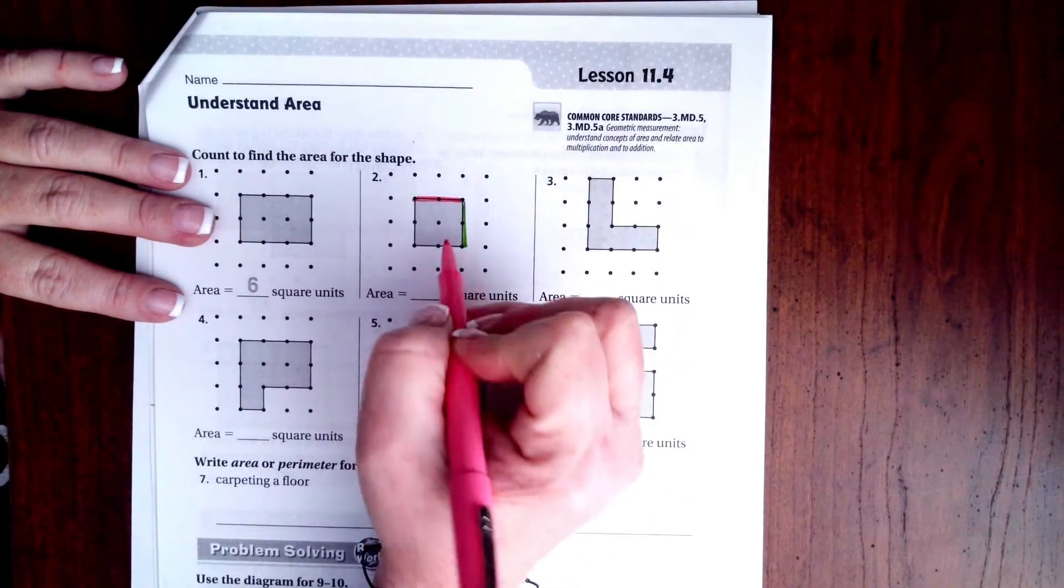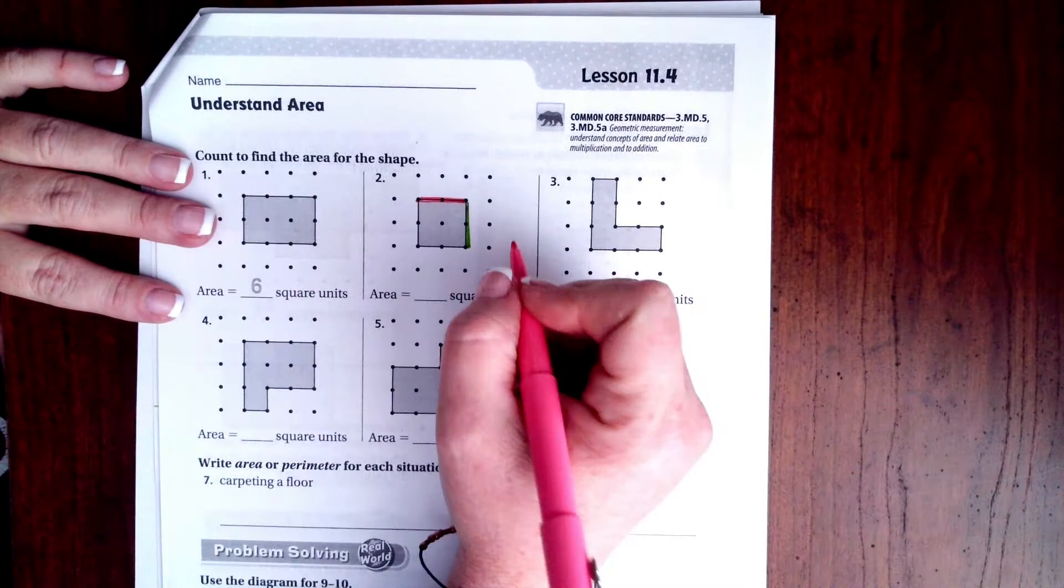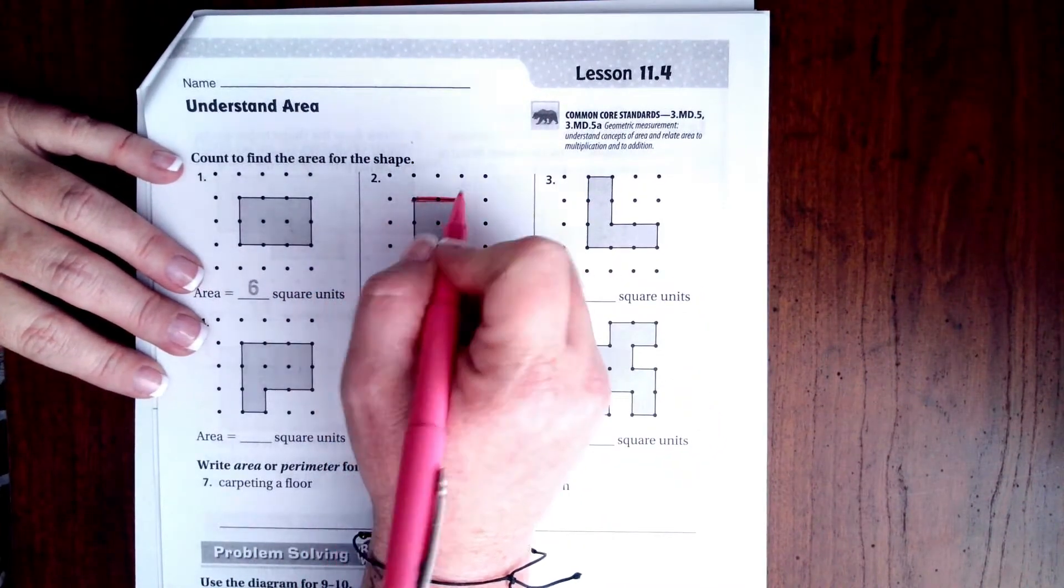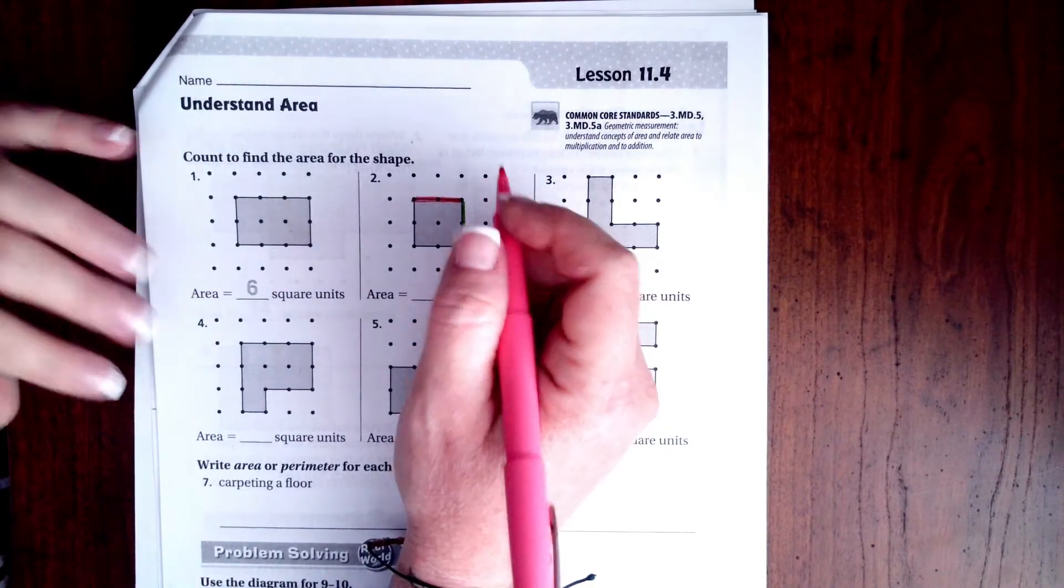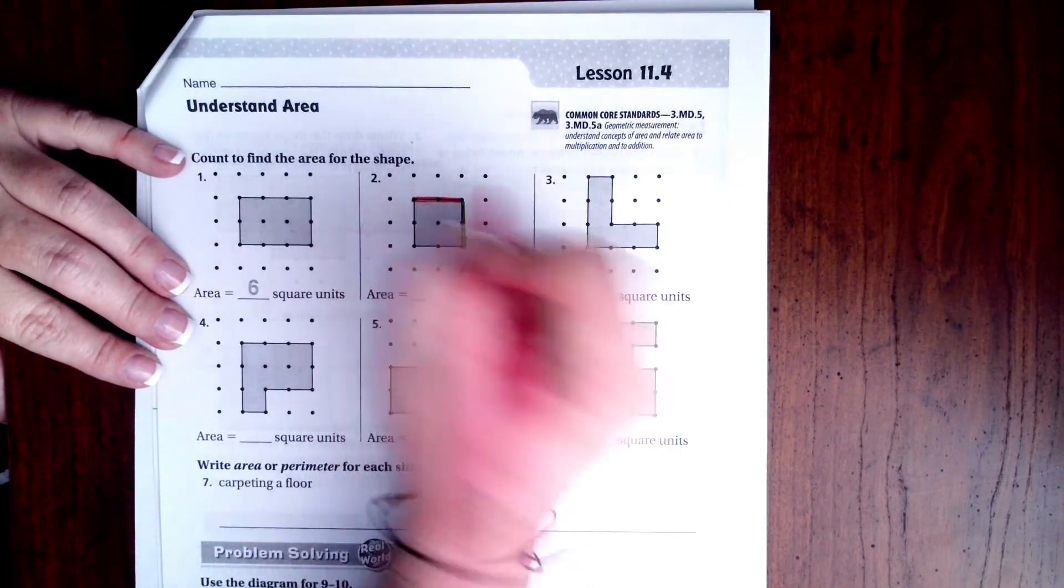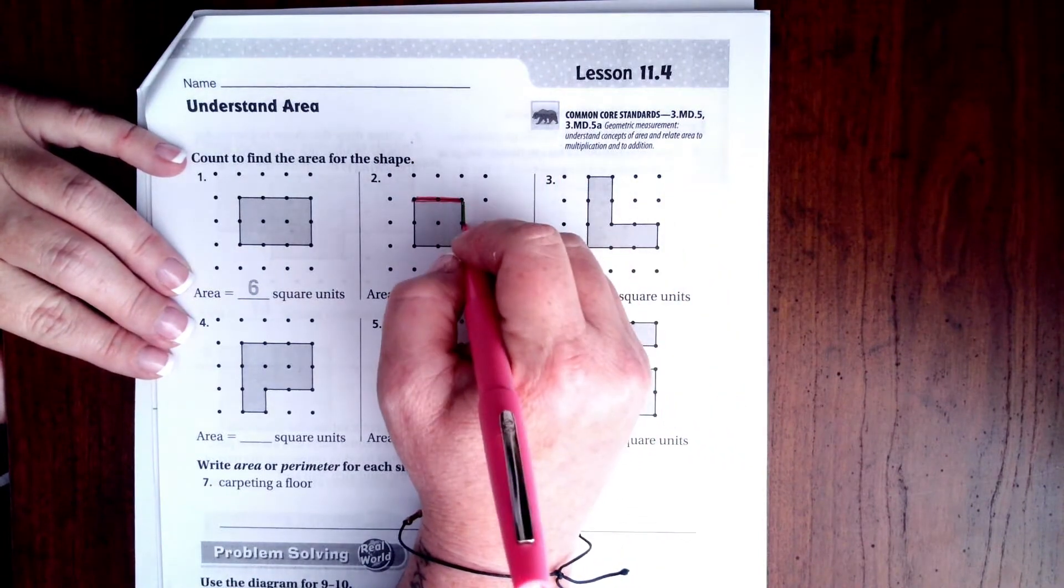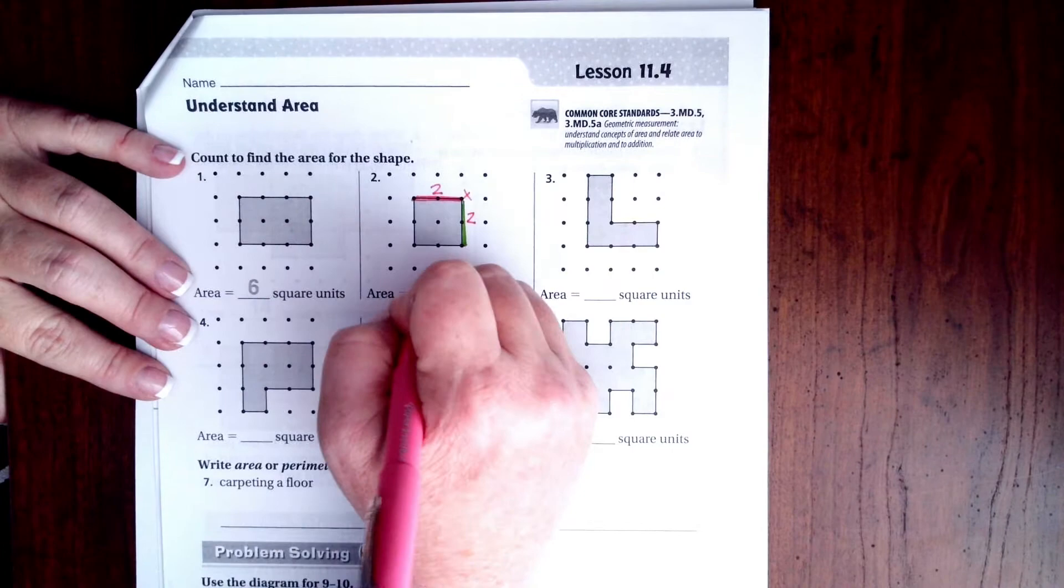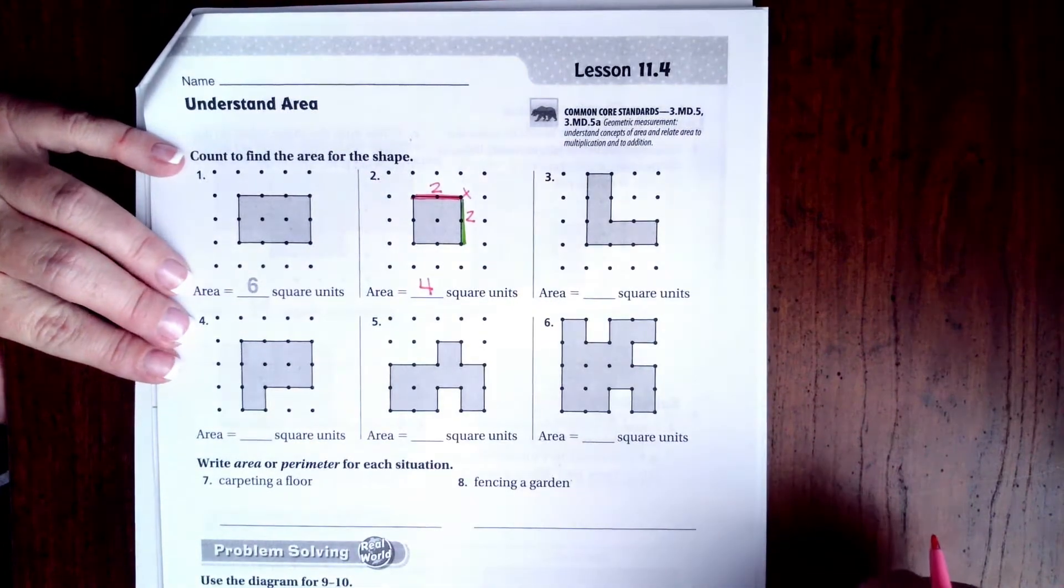You will notice that I colored the sides of these again because all we're doing this time is finding the length and the width of a square, and then you multiply those two. So I have 1, 2 going across, and then I have 1, 2 going down. So 2 times 2, that's 4.